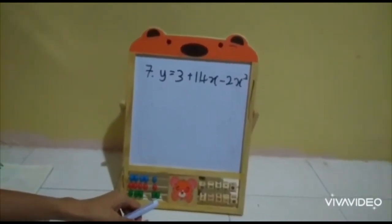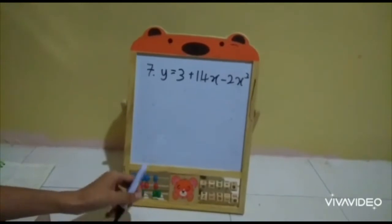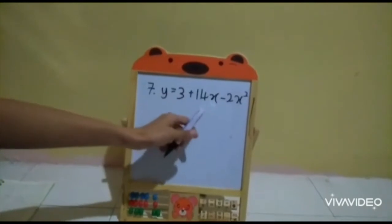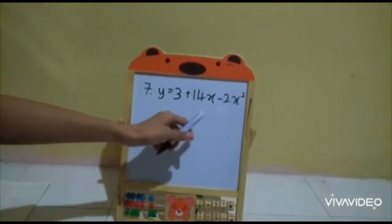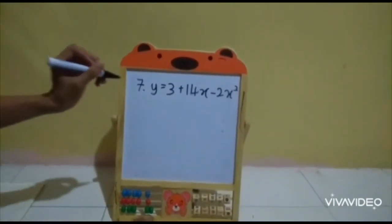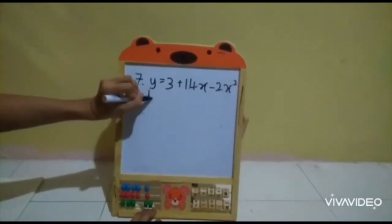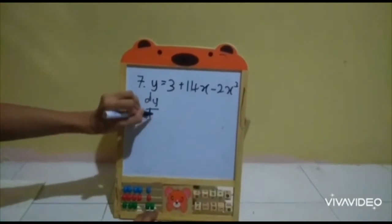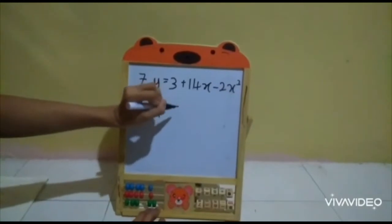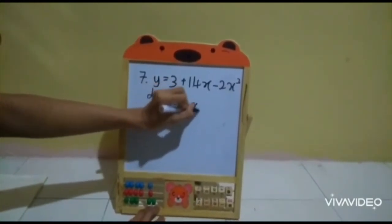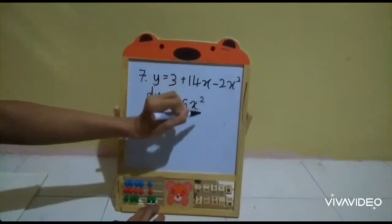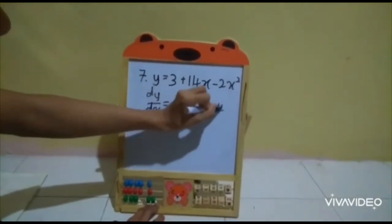Continuing with question 7: y = 3 + 14x - 2x³. We must first differentiate it. Differentiating gives dy/dx = -6x² + 14.